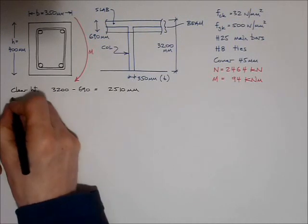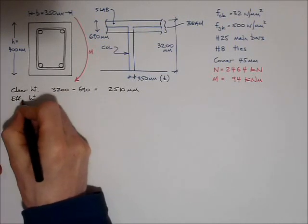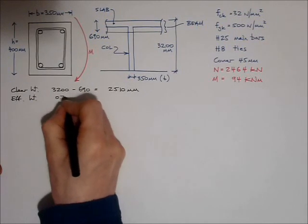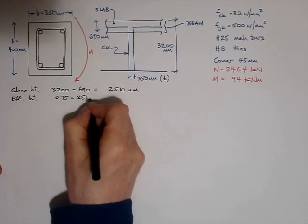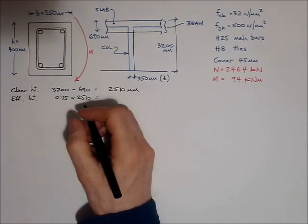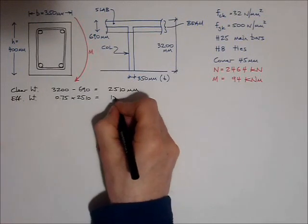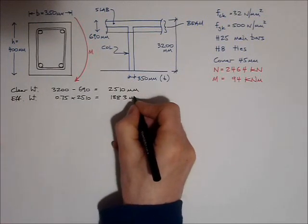That means I can reduce its clear height by a factor of 0.75. So the effective height is 0.75 times 2510, which gives me a height of 1883 millimetres.